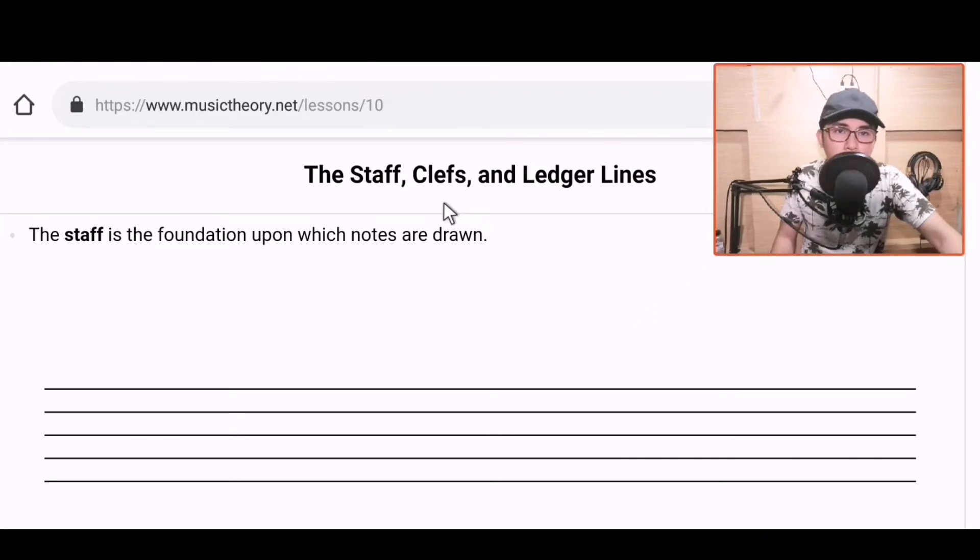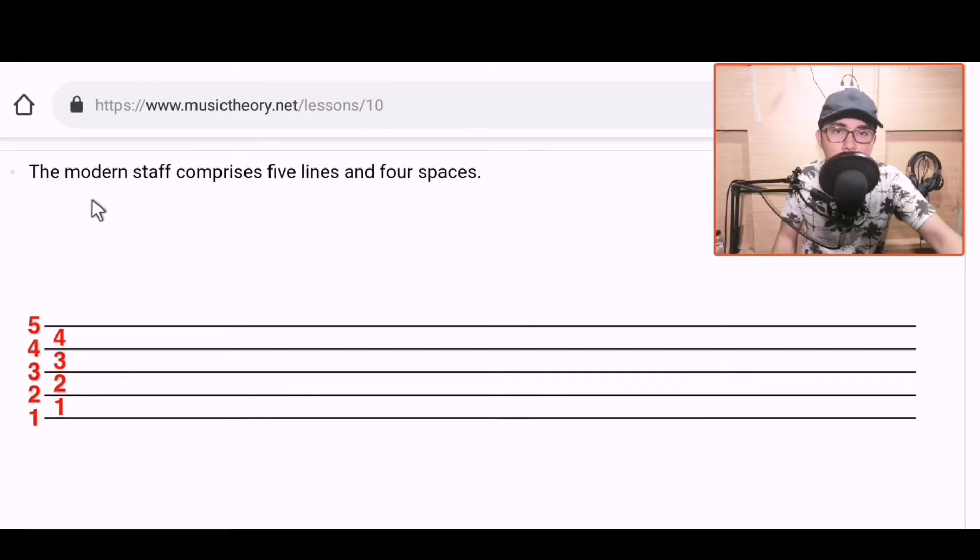Okay, so this says introduction: the staff. This is the first thing we'll learn. The description says the staff is the foundation upon which notes are drawn. If you look at musical pieces, you'll notice this component is always there. This is called the staff. The modern staff comprises five lines and four spaces. Always remember guys that our staff has five lines.